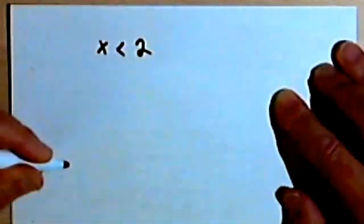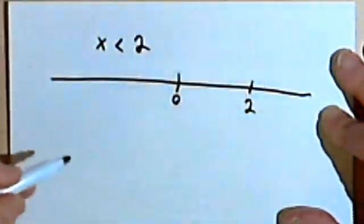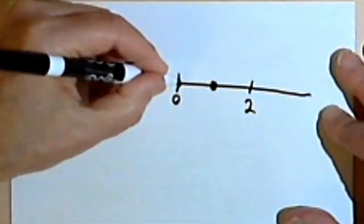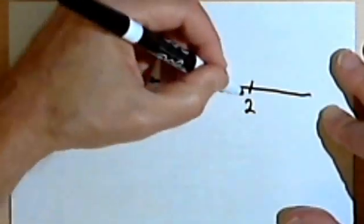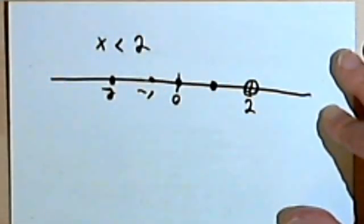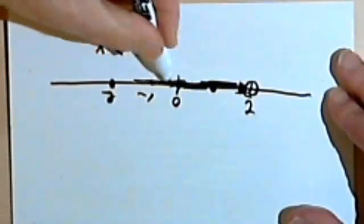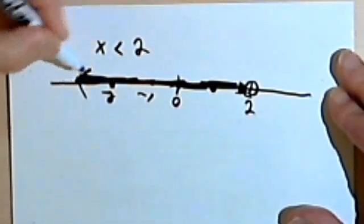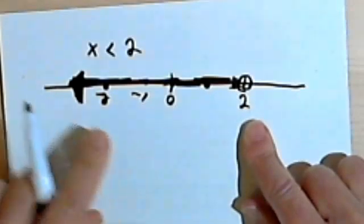Well, if things can be greater than something, they can also be less than something. So let's say I want to show that x is less than 2. Here's my number line, here's my 2. X could be 1, it could be 0, negative 1, negative 2 — anywhere along here. It can't be 2, so I'm going to put an open circle there, and I'll darken the line for all numbers less than 2 and draw an arrow to show that I can keep going. This is a graphic way of showing that x is less than 2.